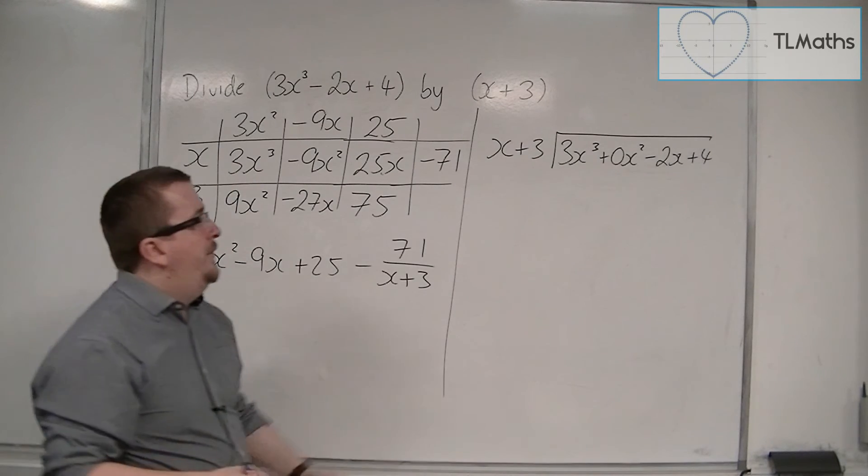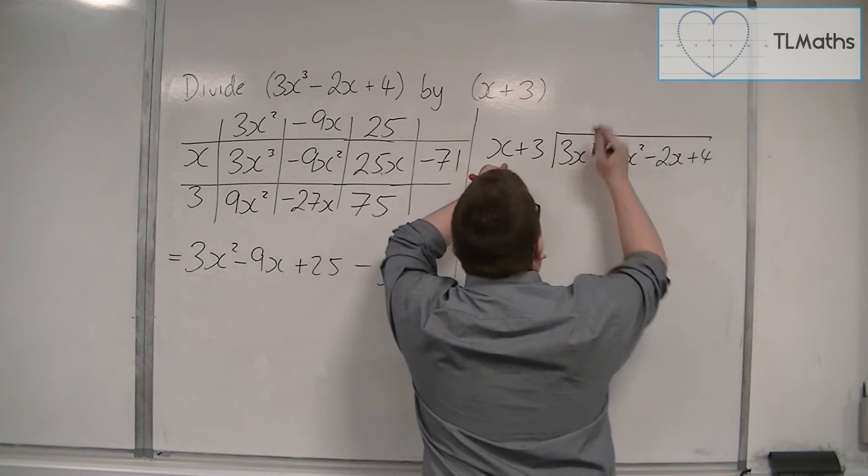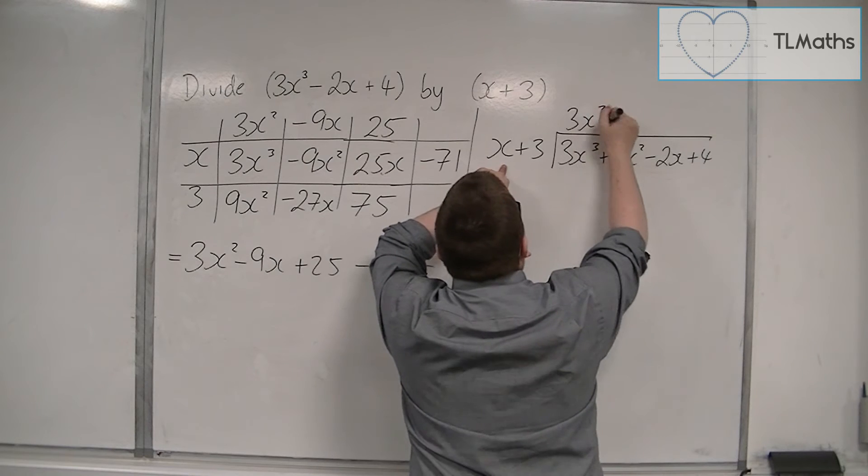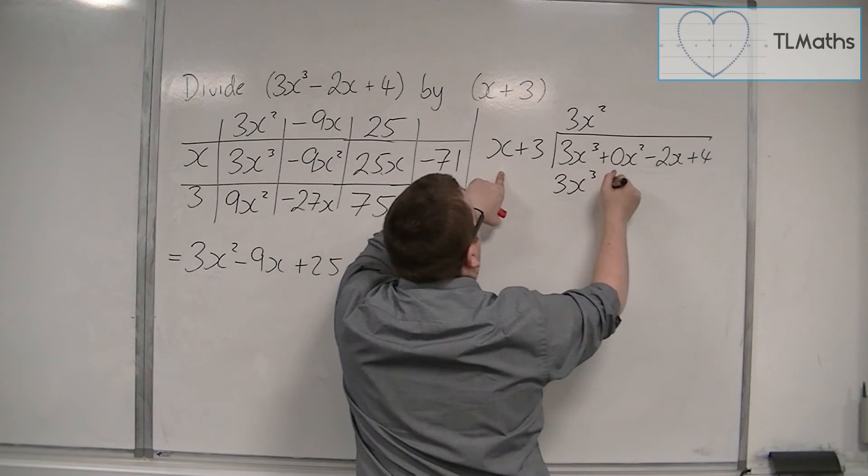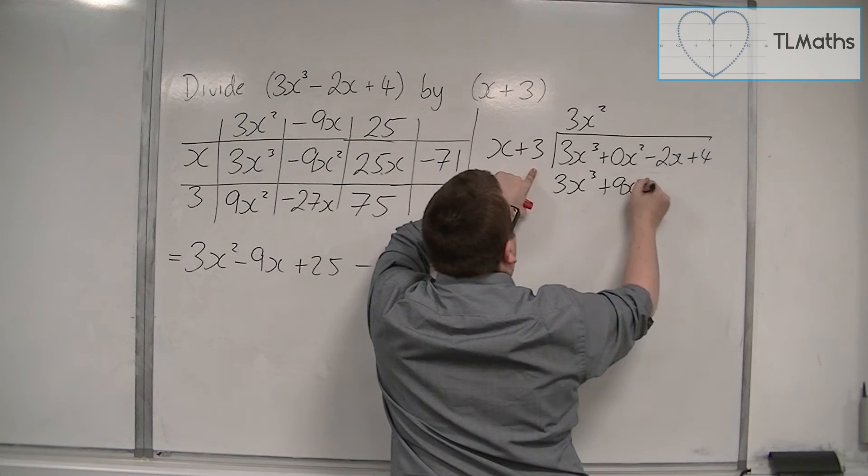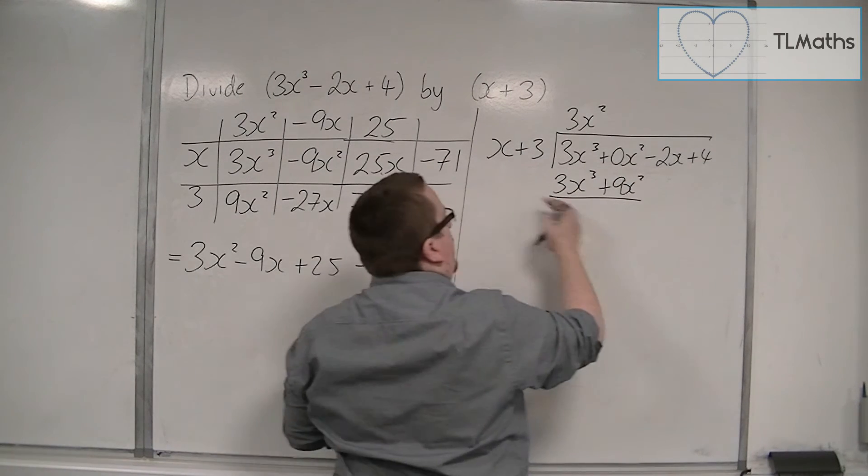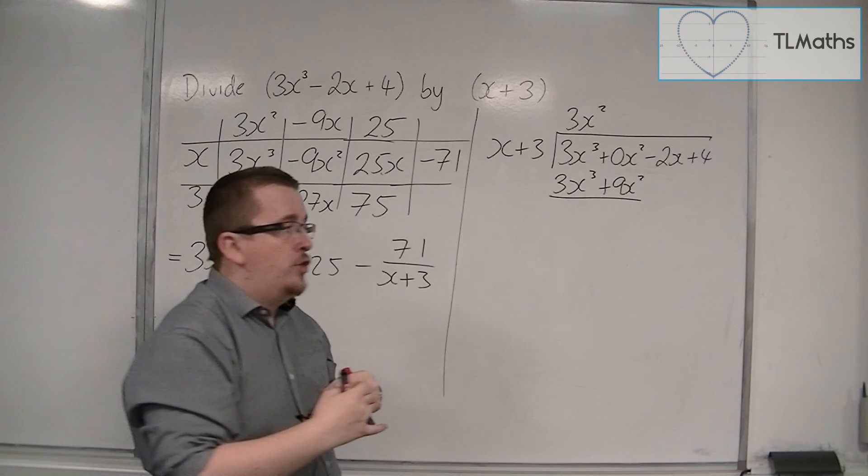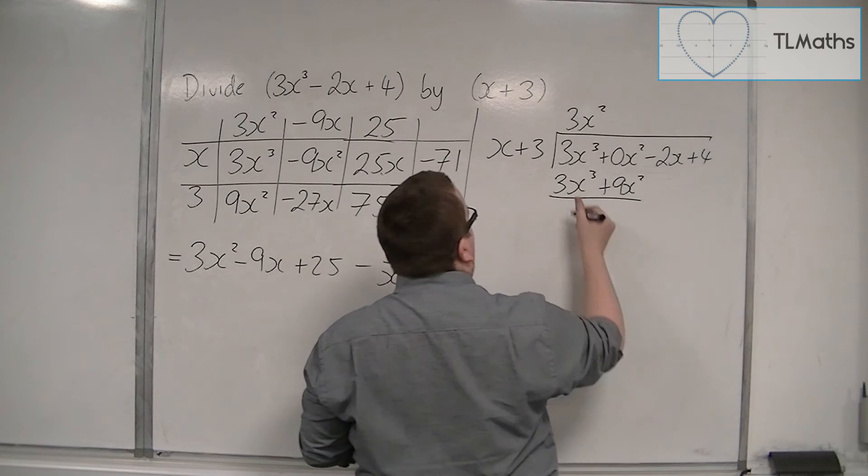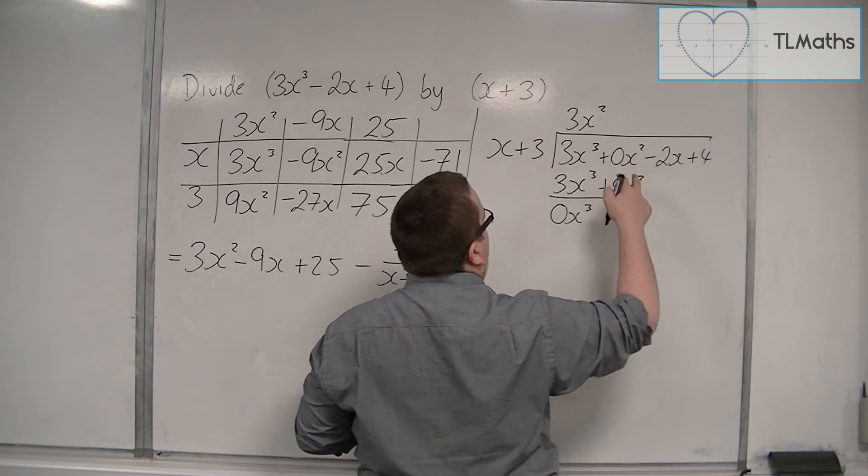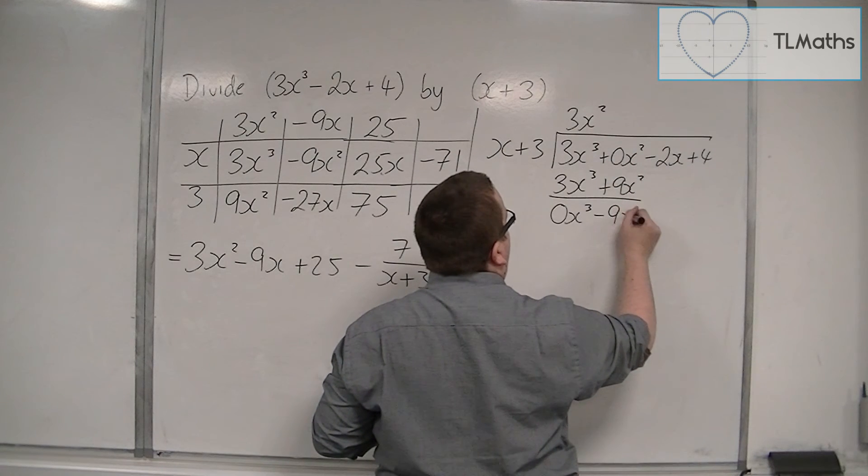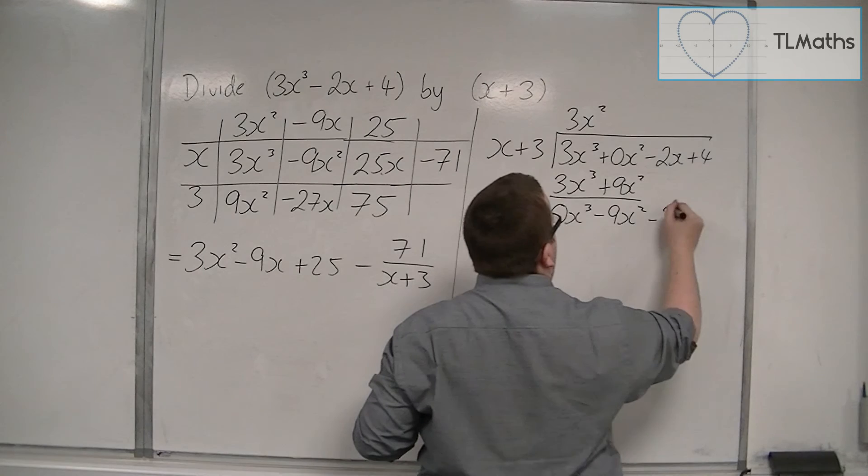So what happens is I write x into 3x cubed goes 3x squared. 3x squared times those two terms is 3x cubed plus 9x squared. Then I draw a line and perform a subtraction. 3x cubed take away 3x cubed is 0x cubed. And I've got 0x squared take away 9x squared, so minus 9x squared. And I bring the next term down.